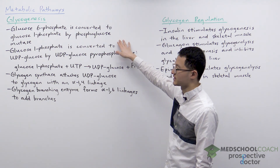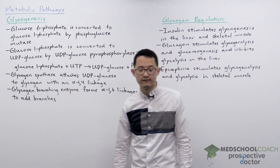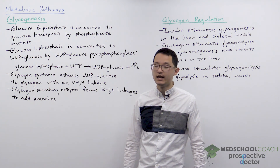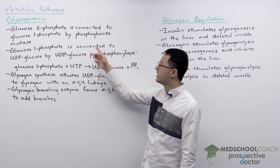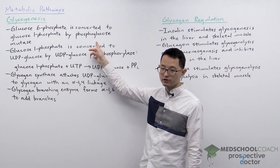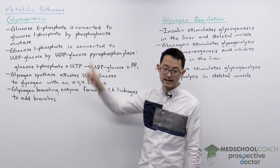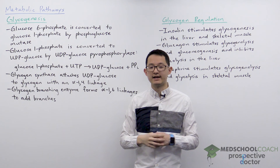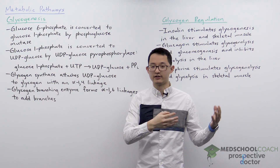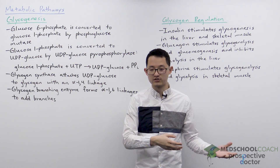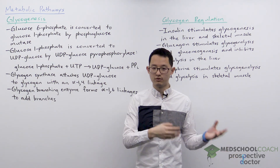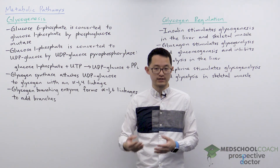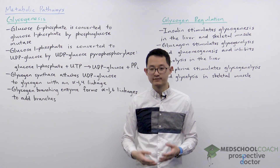First, glucose 6-phosphate is converted to glucose 1-phosphate by the enzyme phosphoglucose mutase. This is the same enzyme used in glycogenolysis, where glucose 1-phosphate is converted to glucose 6-phosphate.